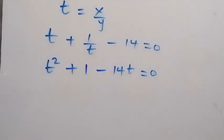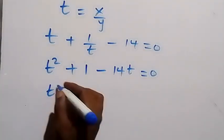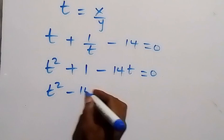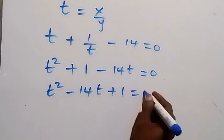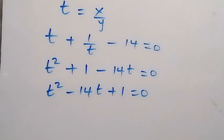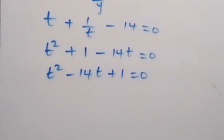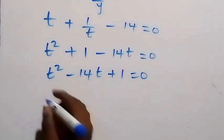And from here, we can rearrange. And this will give us t squared minus 14t plus 1 equals 0. This gives us a quadratic equation, which we can solve using the quadratic formula.